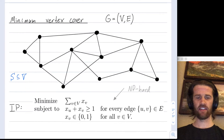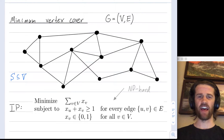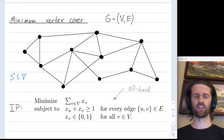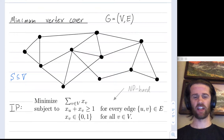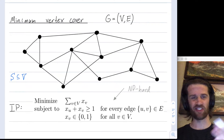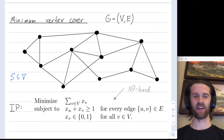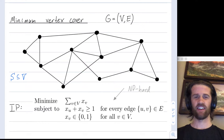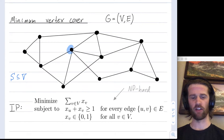In the minimum vertex cover problem, we're trying to find a collection of vertices — I'll call it S — which is a subset of our vertex set where every edge is adjacent to at least one vertex in S. We're trying to find the minimum such cover. Let's try to find one by hand; I won't claim to find the optimal vertex cover, but let's try to do a reasonably small one.